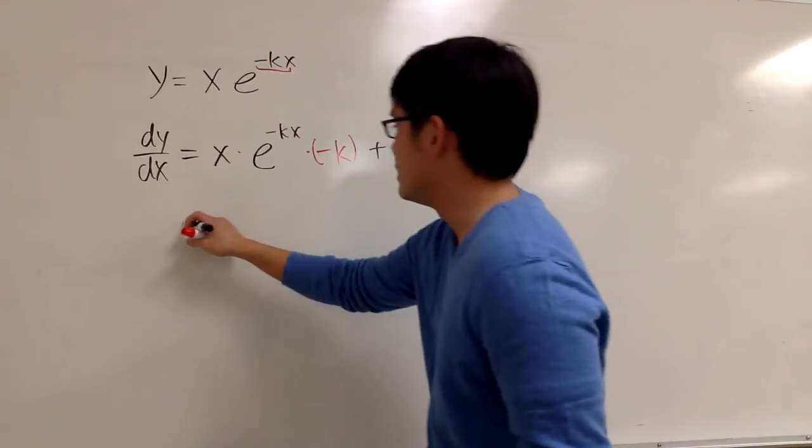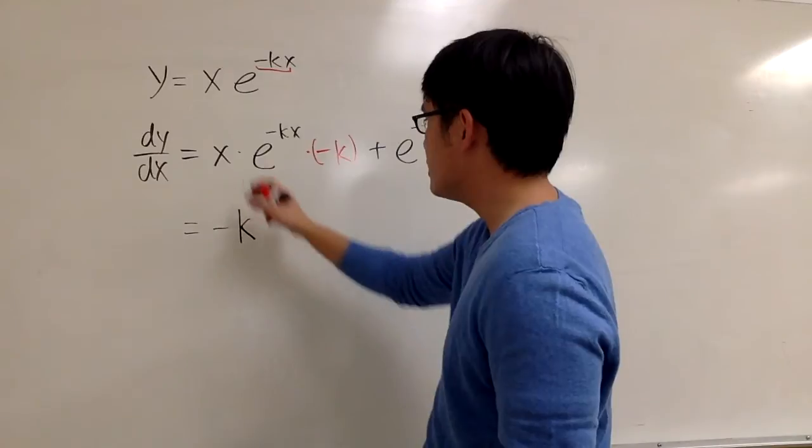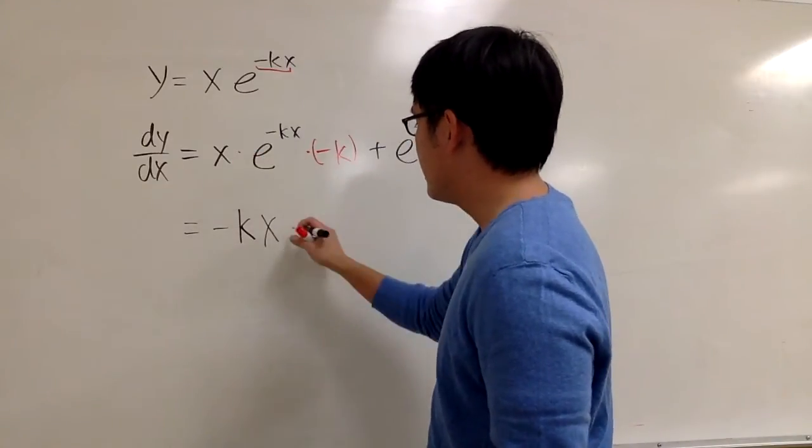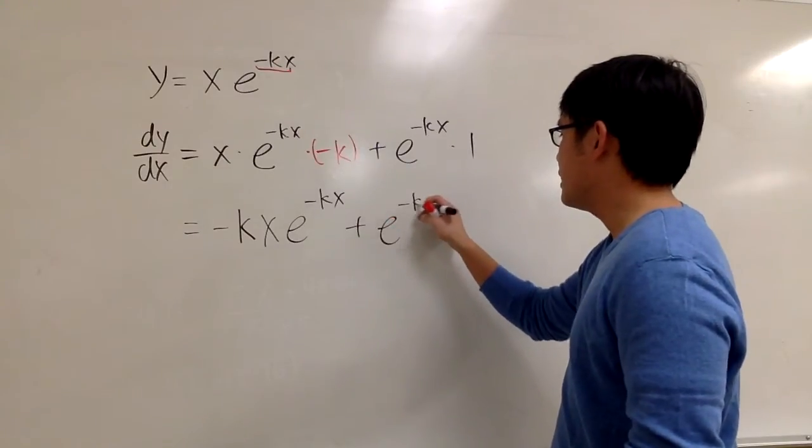A few things that we can do with this. Of course here, we can write the negative k first, because that's the constant, and then x, and then e to the negative kx, and here we have plus e to the negative kx.